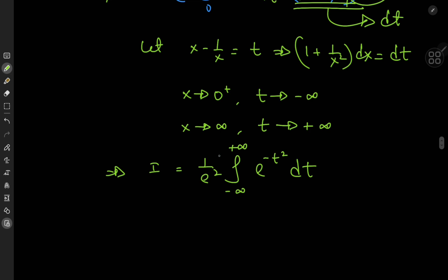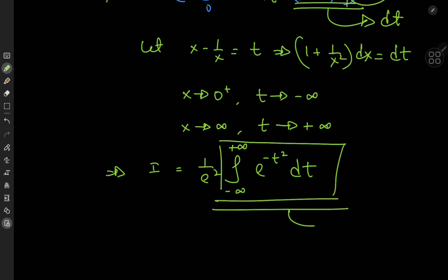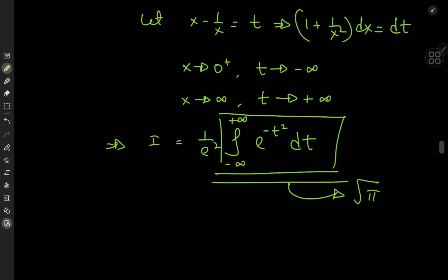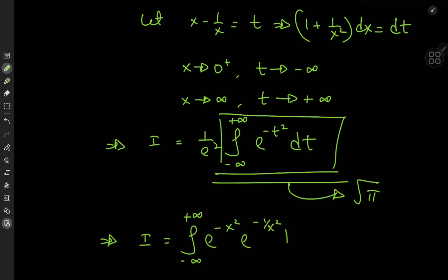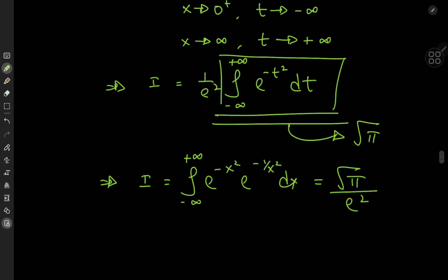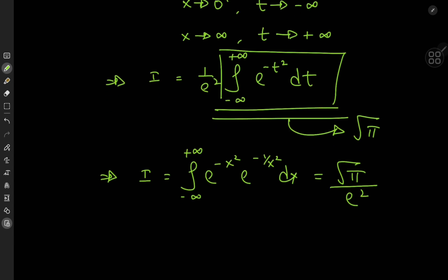And this whole thing is just the classic Gaussian integral, which we know evaluates to root pi. So that means this spooky Gaussian version has a very beautiful result. We conclude that the integral from negative to positive infinity of e to the negative x squared times e to the negative 1 by x squared dx equals root pi by e squared. A very beautiful result involving both our favorite transcendentals — we have pi to the 1 by 2 and e squared, which is a very nice contrast.